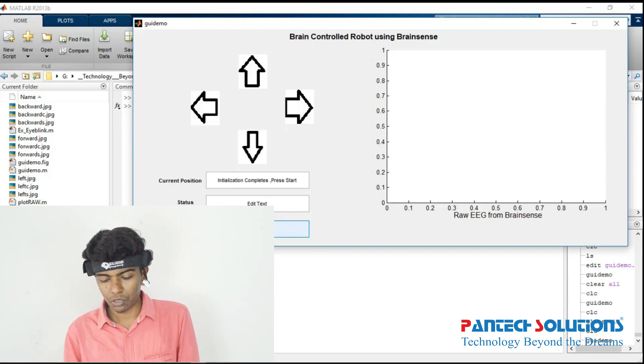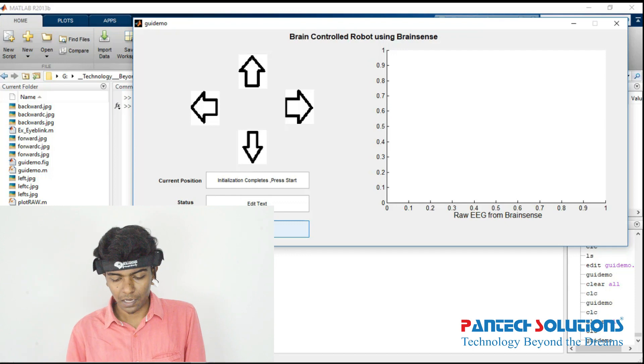Here in the raw EEG graph, it will show the raw stream of my EEG. Then I will move this car forward and then right.